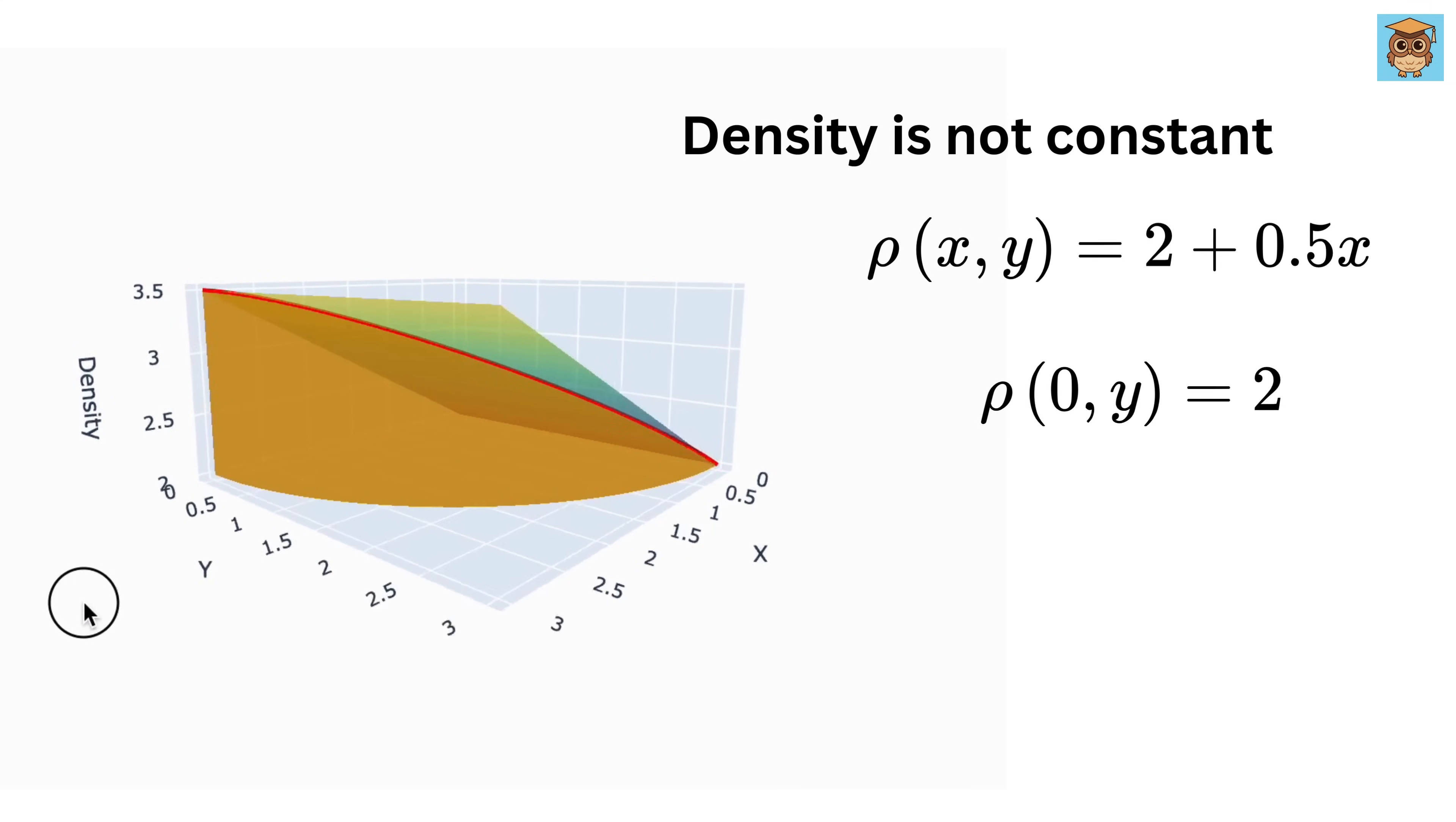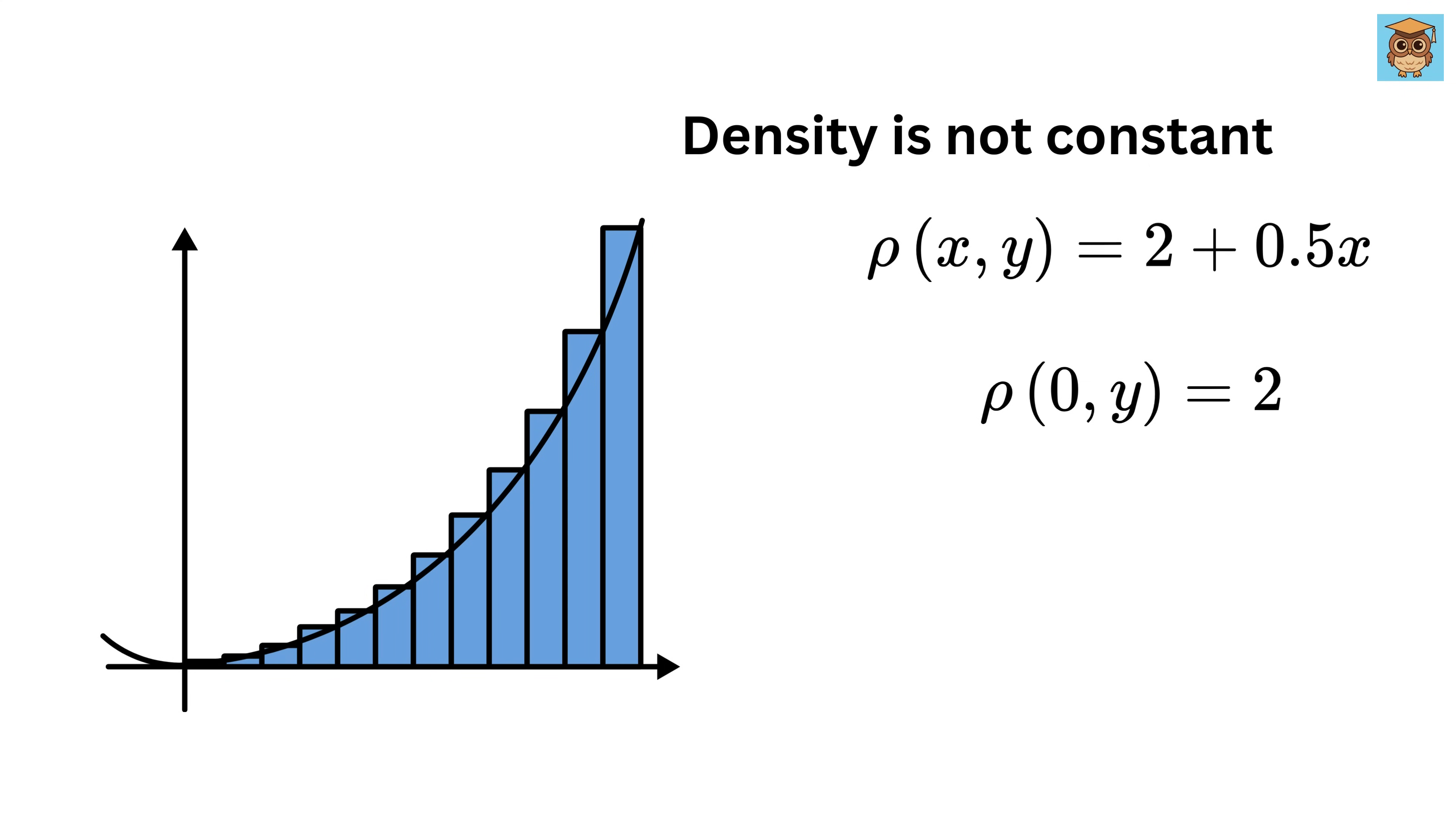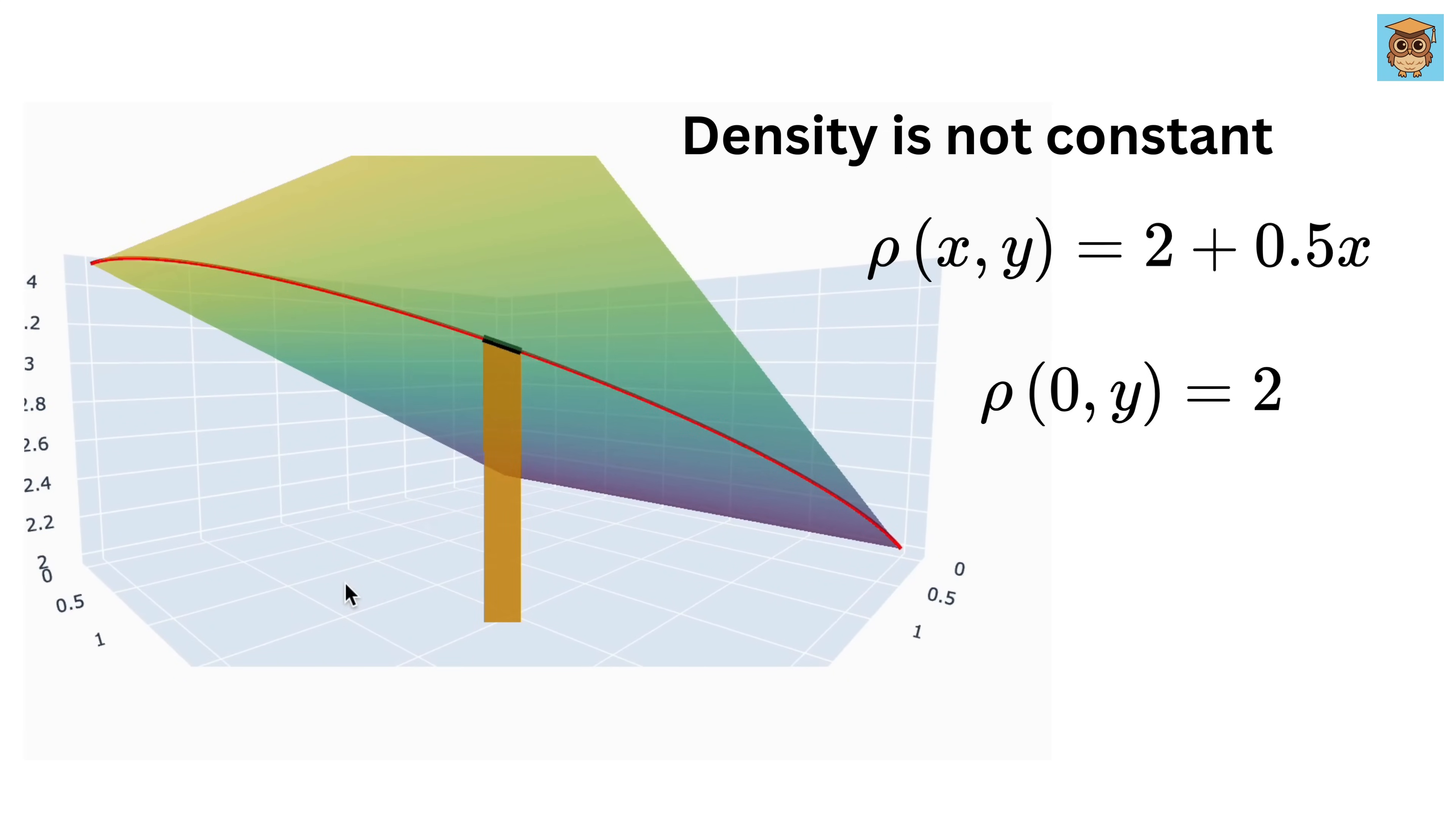Now, if we want to calculate the mass of this wire, what should we do? Yeah, bring in integration to the picture. You know, when we want to find an area under the curve, we simply integrate by breaking it into smaller parts, and then add them up. So assume we have this small region where the wire has a tiny segment, a small length ds.